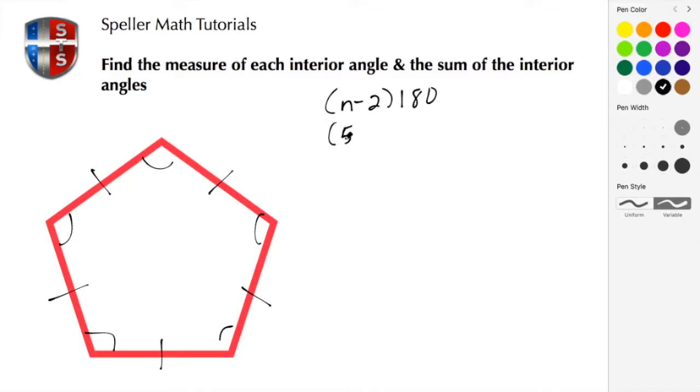Then we're going to rewrite the equation, so that's going to be 5 minus 2 times 180. Well, 5 minus 2 is 3, so we're going to multiply 3 times 180, and 3 times 180 is 540.